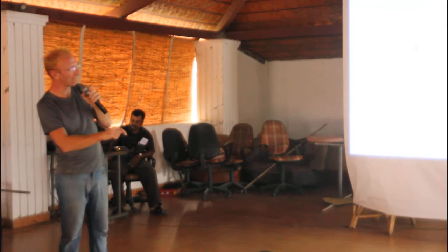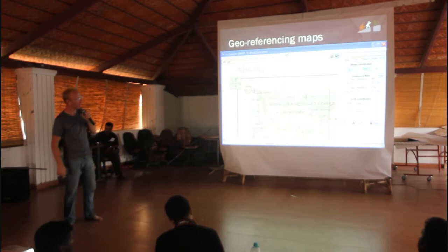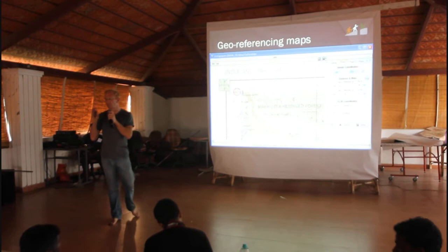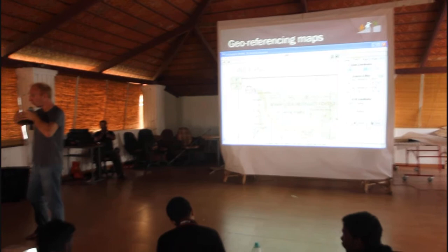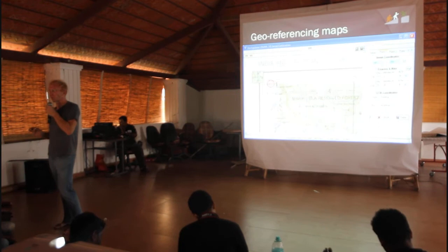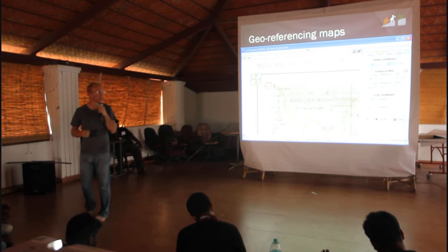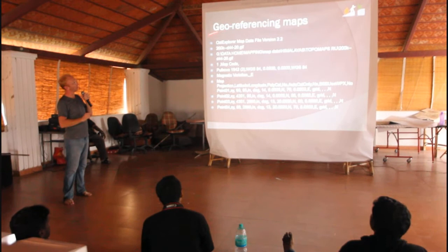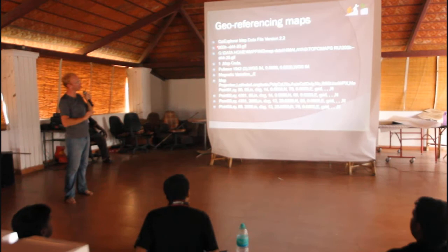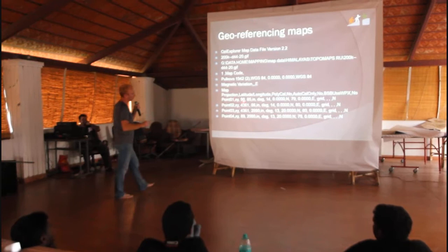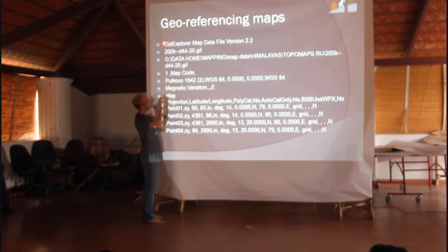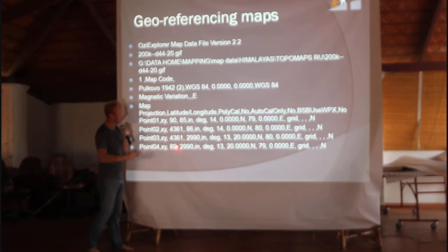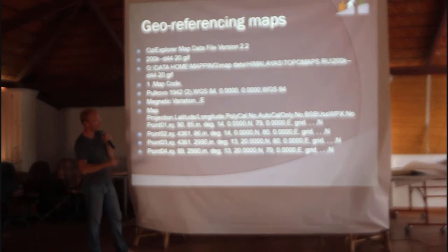A georeferenced map means the computer or any mapping program can calculate the exact latitude and longitude of any point on that map. A map can only be used intelligently — loaded into a GPS, or used to overlay trails — if it is georeferenced first. A JPEG or paper map is useless until georeferenced. Using a tool like OziExplorer, you create a calibration file: for example, the top-left corner at pixel coordinates 90x85 corresponds to a specific latitude/longitude, and the bottom-right to another.